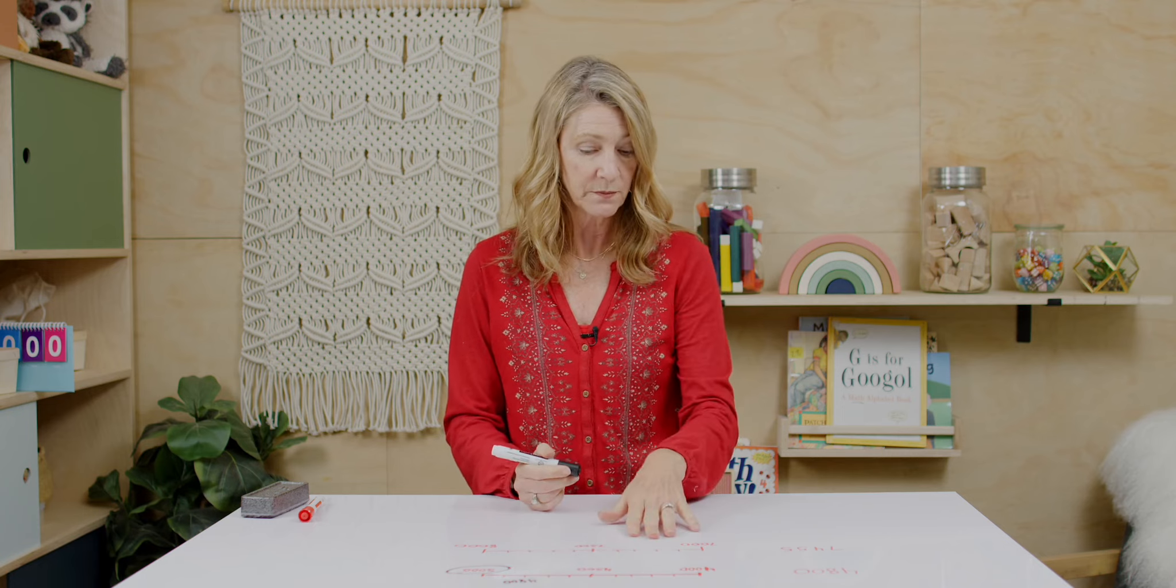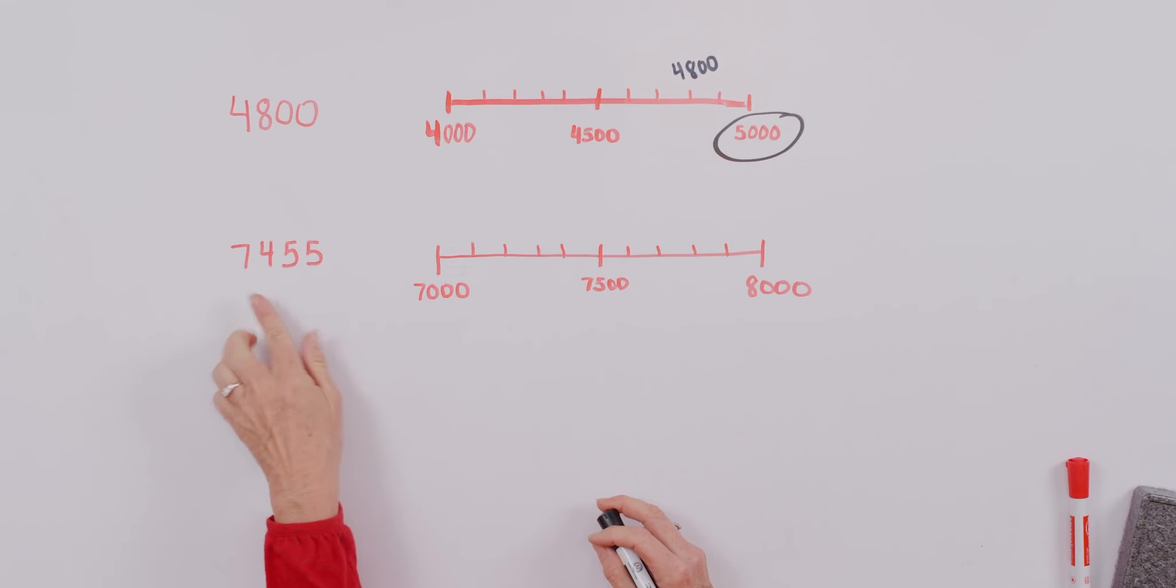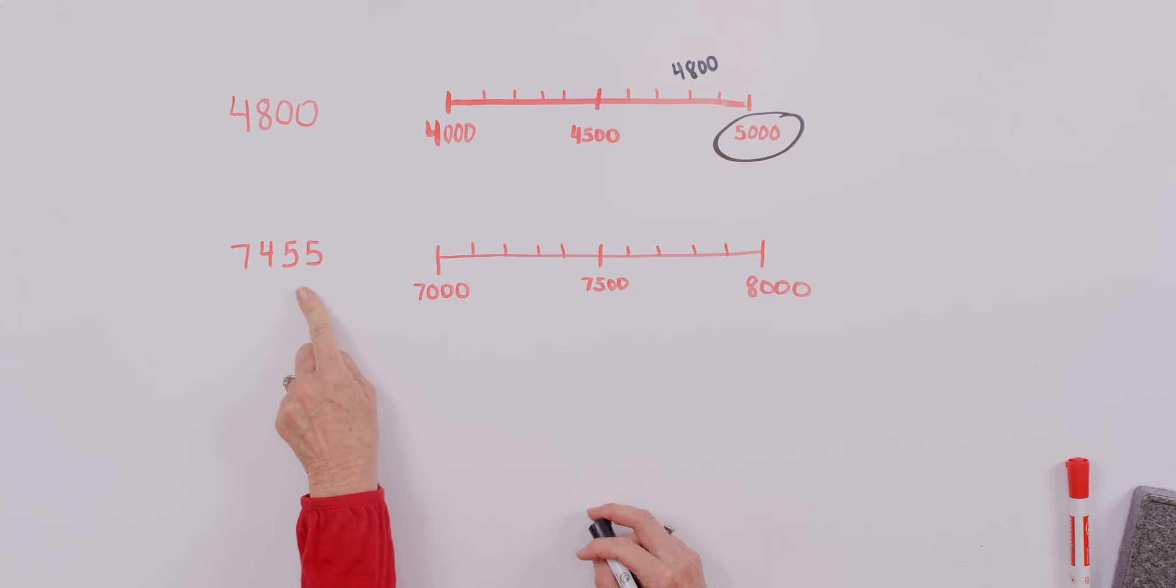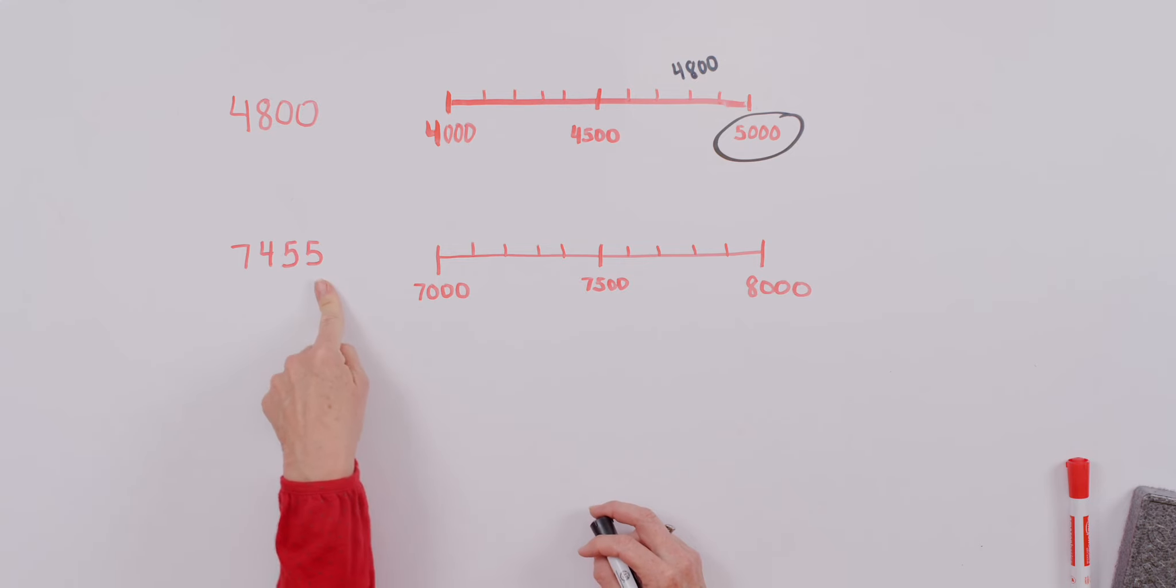Let's just take a look at one more here. Okay, let's take a look at this number, 7,455. Again, we're checking our little hash marks, and they still are, we can see because it's so similar to the top number line, that we're still talking about hundreds. 7,100, 200, 300, 400, 7,500, and so on. So, how would we determine where to put the number 7,455?